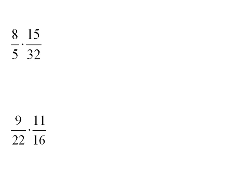Okay, so right now we have 8 over 5 times 15 over 32. So I notice that the 8 and the 32 have something in common that we could divide out.